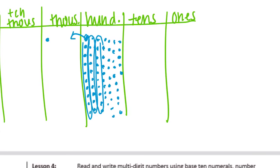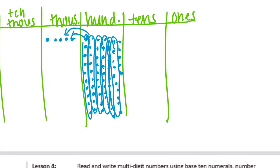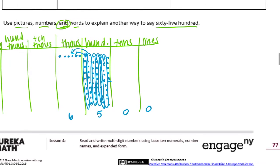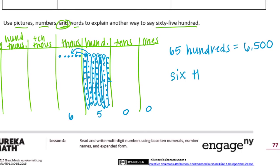So we're going to have six hundreds that turn into six groups of ten hundreds — sixty hundreds — which turns into six thousands. And then we have five hundreds left. So it turns into six thousand five hundred. So there's our picture. We can say sixty-five hundred equals six thousand five hundred. Or, let's write it in word form: six thousand five hundred.